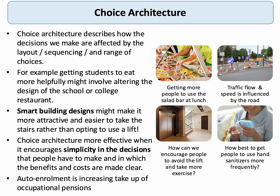Choice architecture describes how the decisions we make are affected either by layout, or sequencing, or the range of choices. So for example, in your local school or college the choice architecture of the restaurant — the way in which the food is both organised and sequenced — can affect the choices that you make, and whether or not you, for example, ever have a healthier lunch, like a salad rather than the burger.